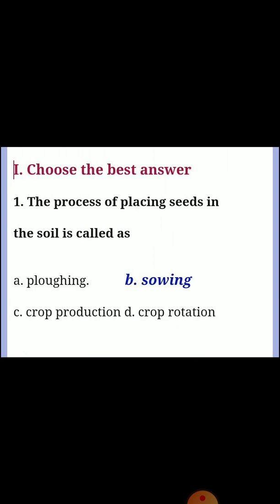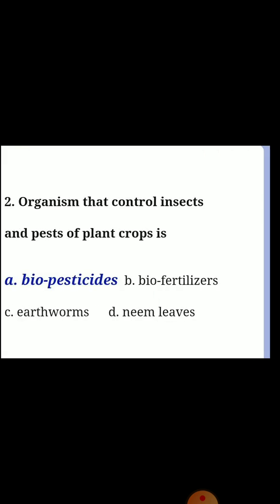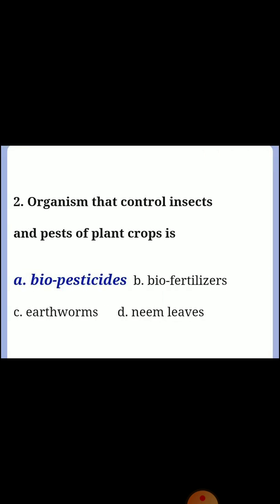First section: Choose the best answer. First question: the process of placing seeds in the soil is called? Answer B: Sowing. Second question: organism that controls insects and pests of plant crop is? Answer A: Biopesticides.